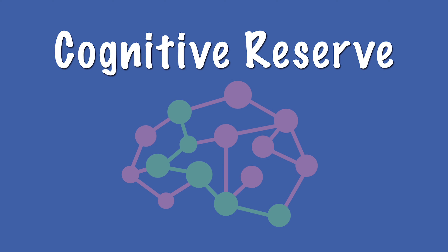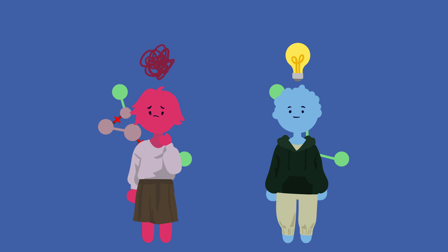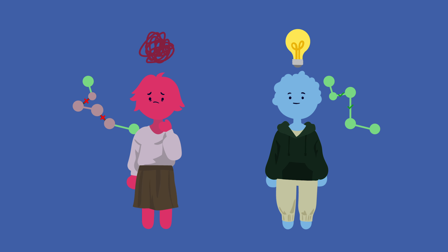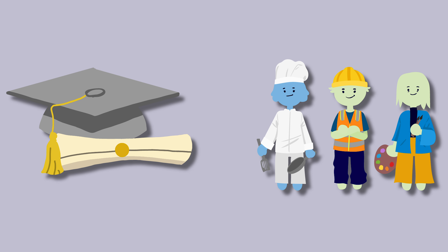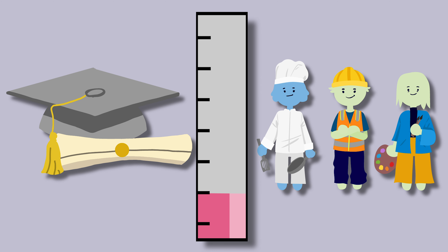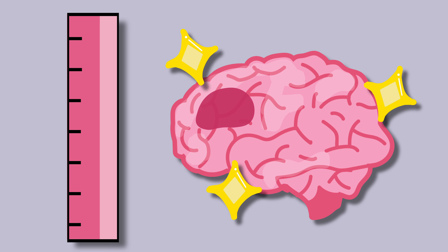Then there is cognitive reserve, which refers to the brain's ability to rewire itself and find alternative ways to perform a function if the original pathway is damaged. A person with a high cognitive reserve can cope better with brain damage than a person with low cognitive reserve. The concept of cognitive reserve has been linked to education and occupational attainment, and people with more education and greater occupational attainment are believed to have a higher cognitive reserve and demonstrate reduced susceptibility to Alzheimer's disease.